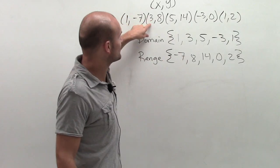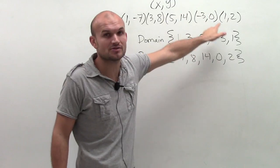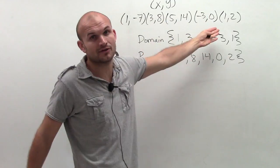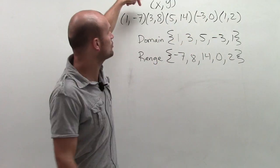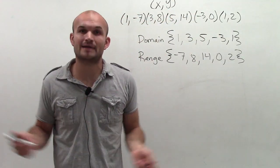But you can see that 3 corresponds to 8, 5 corresponds to 14, and negative 3 corresponds to 0. They don't correspond to any other numbers. However, since 1 corresponds to negative 7 and 1 corresponds to 2, we do not have a function.